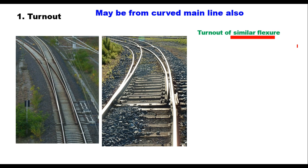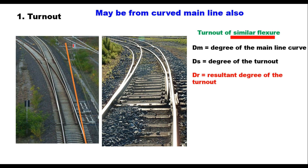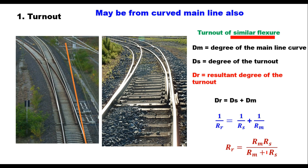The degree of the curve is measured from the tangent track or a straight line. To find the degree of the turnout with respect to a tangent or straight track, the formula is: let dm be the degree of the main line curve, ds the degree of the turnout, and dr the resultant degree of the turnout. Then dr = ds + dm, or 1/rr = 1/rs + 1/rm, meaning the radius of the resultant curve equals rm × rs / (rm + rs).